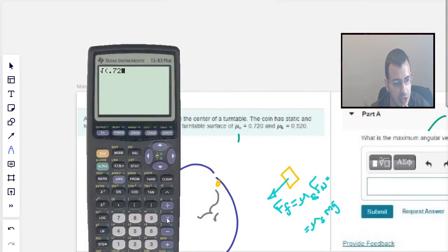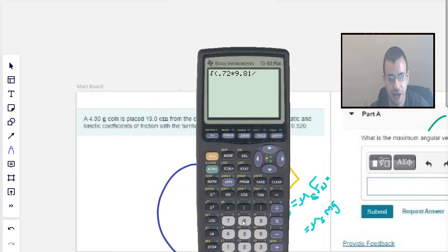Times gravity, which is 9.81. Divided by the radius, which I think they gave it to us in centimeters. I'm going to convert it to meters. And then we square root the whole thing. And I get an answer of 6.097, which I'm going to call 6.1.